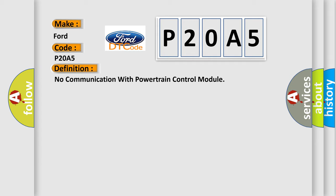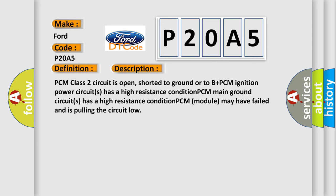The basic definition is No communication with powertrain control module. And now this is a short description of this DTC code. PCM class 2 circuit is open, shorted to ground or to B plus. PCM ignition power circuits has a high resistance condition. PCM main ground circuits has a high resistance condition. PCM module may have failed and is pulling the circuit load.